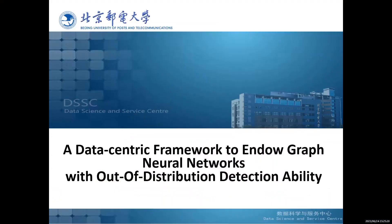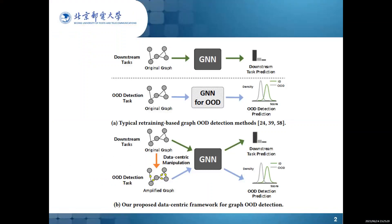Hello everyone, today I'm going to present my KDD paper: a data-centric framework to endow graph neural networks with out-of-distribution detection ability. Nowadays, GNNs have demonstrated great capabilities in many areas. Nevertheless, GNNs also have some limitations such as generalization, interpretability, and robustness. Some works have been proposed to tackle these issues from a modeling perspective, which requires additional cost of retraining model parameters, making them infeasible in practice.